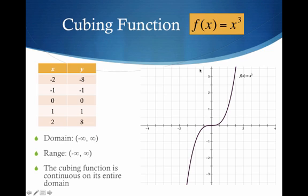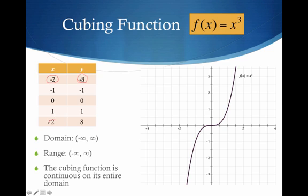The cubing function — for every x I plug in, I cube it to get my y. Note: negative 2 cubed gives me negative 8, and 2 cubed gives me positive 8. The domain and range is negative infinity to positive infinity, and of course this function is continuous. A lot of times people refer to this as the snake — I've heard people refer to it as the John Travolta. I'll let you try to figure out why; it would require you having seen a movie called Saturday Night Fever.